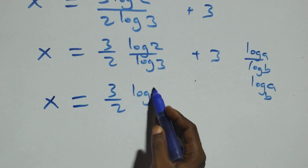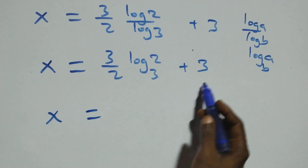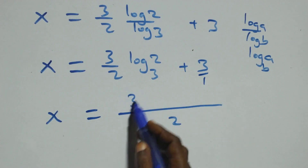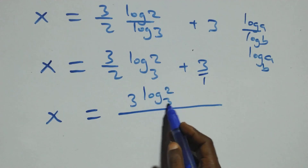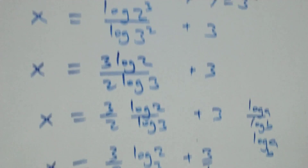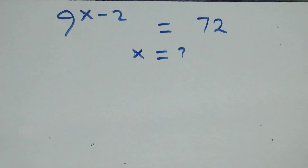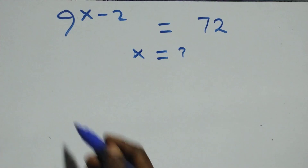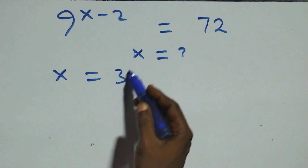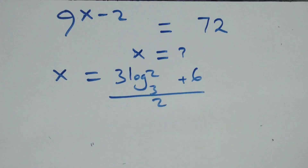Combining terms: 3 over 2 times log 2 over log 3 equals 3 log₃2 divided by 2, and we have 3 log₃2 plus 6, all over 2. Therefore x equals (3 log₃2 + 6) / 2.